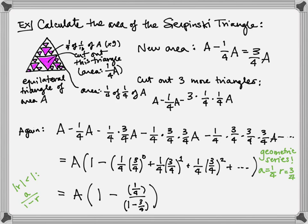And when I simplify one-fourth over one minus three-fourths, well, that's one-fourth over one-fourth, which is one. And I see that my area turns out to be A times zero, or zero.